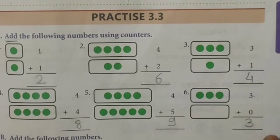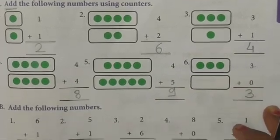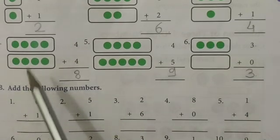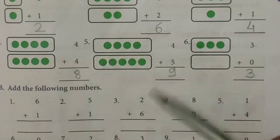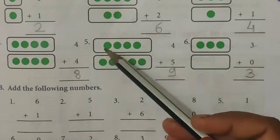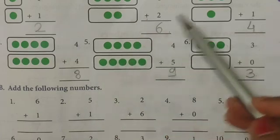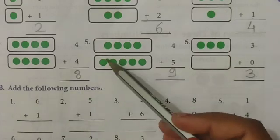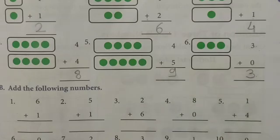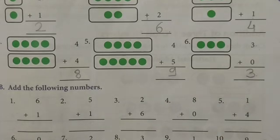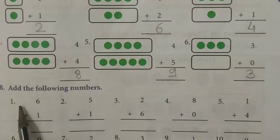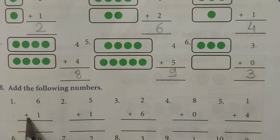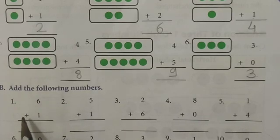Now, next example B: 'Add the following numbers.' Here they have not given you dots — you have to directly add the numbers. First question: six plus one. Read the sign as plus. Six plus one.